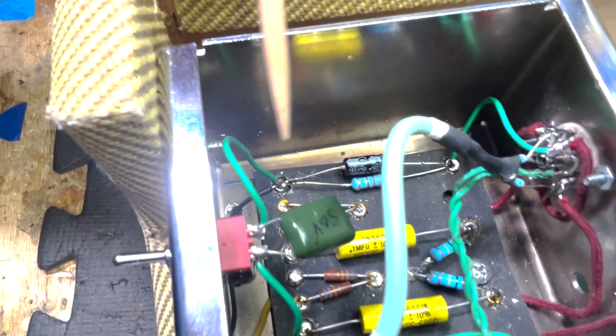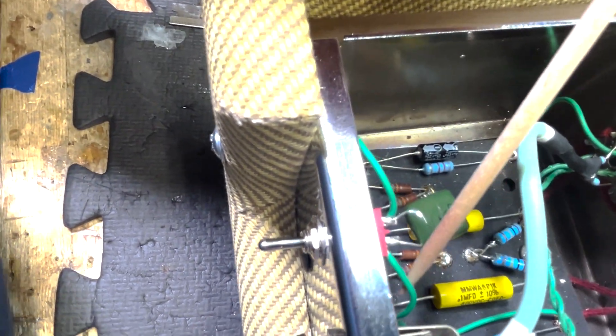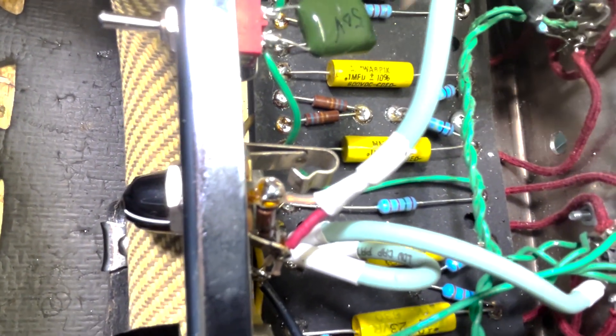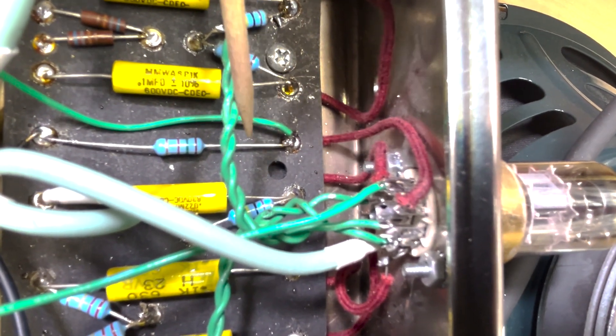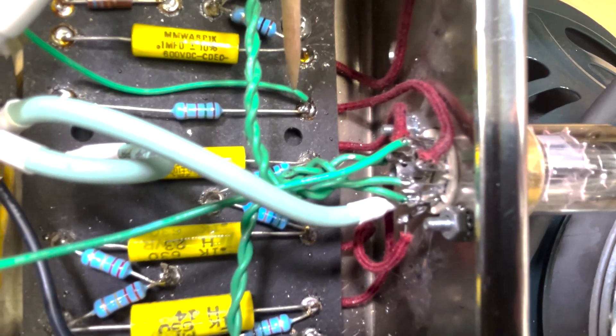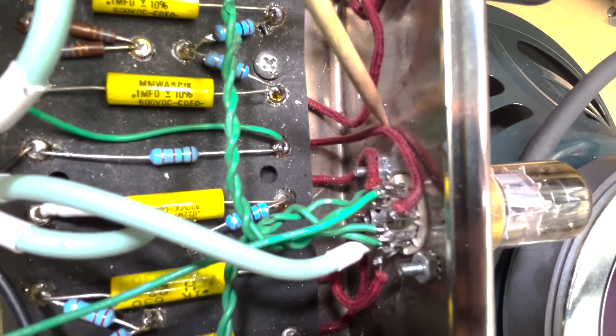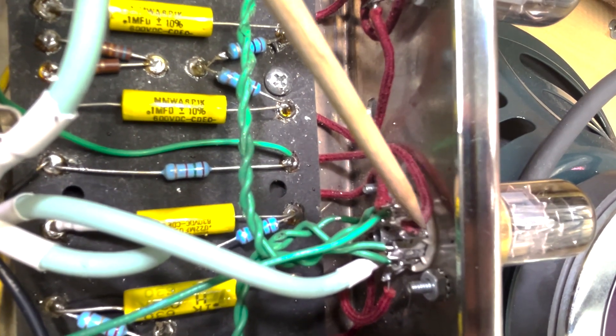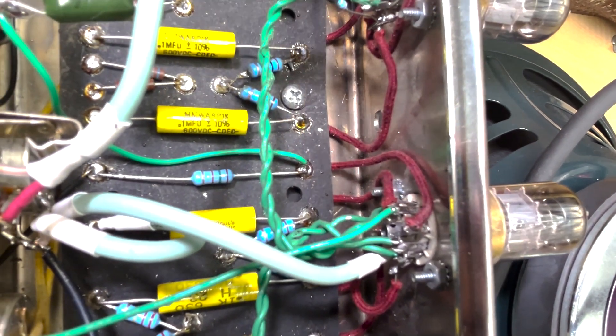And on this side, this green wire goes to right here, which is the top end of this 1.5, which then goes to this maroon colored or red wire to pin 3 of V2.